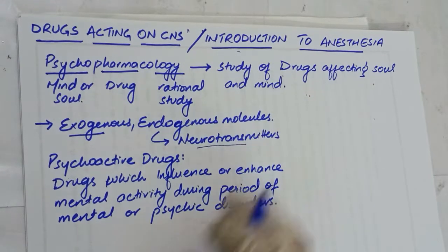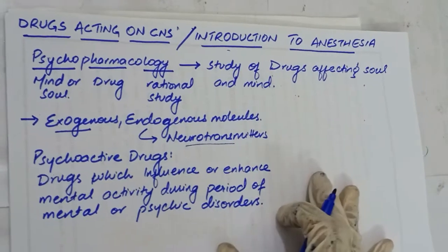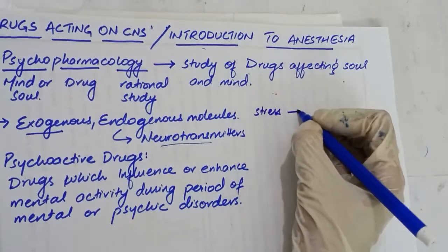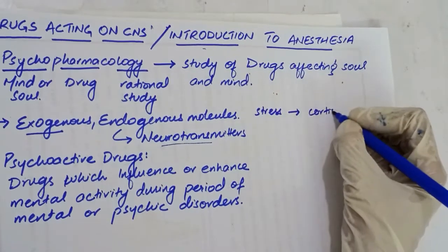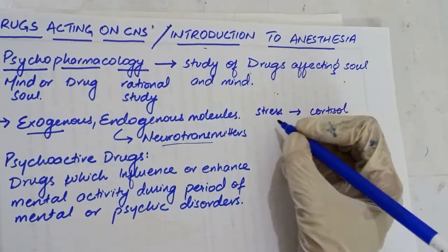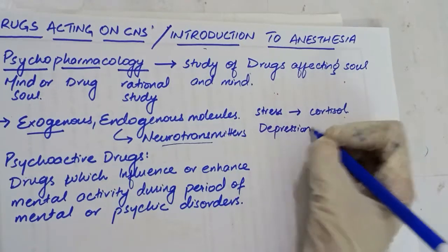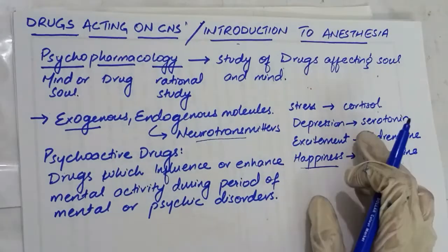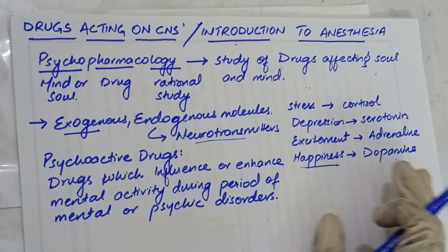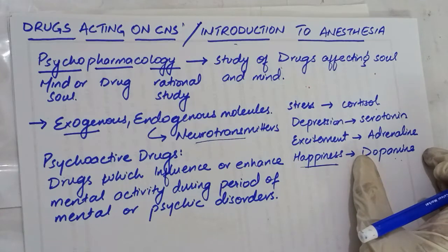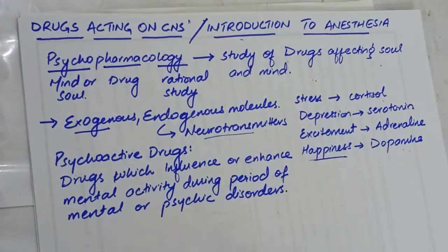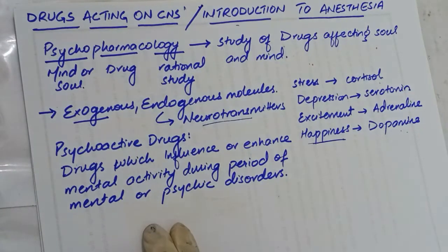Different neurotransmitters are linked with different behaviors. Stress is associated with cortisol — whenever an animal is in stress, cortisol levels increase. Depression is associated with serotonin. Excitement is associated with adrenaline. And happiness is associated with dopamine. So these different neurotransmitters are secreted in or influence different behavioral states.